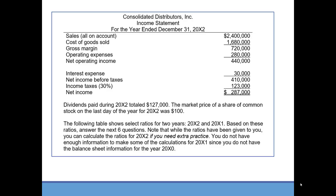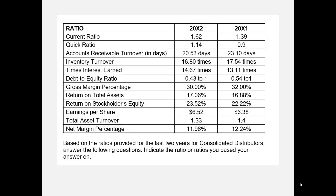We're told that dividends paid during 20x2 totaled $127,000. The market price of a share of common stock was $100 per share. We're given a table of ratios for 20x2 and 20x1 — I've calculated the ratios for you and you'll use those to answer the next six questions. You can also practice calculating the ratios if you would like. Here is a partial list of ratios from the chapter that you'll use to answer the following questions.